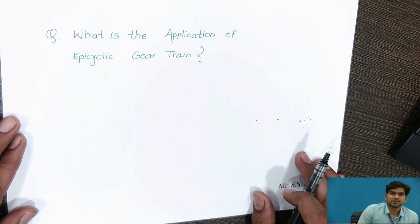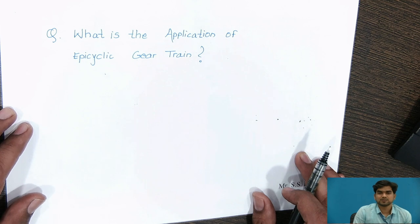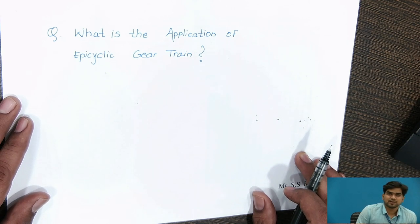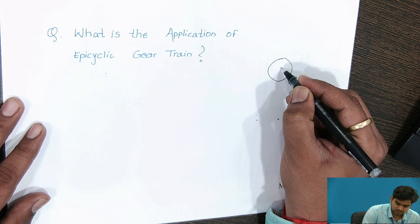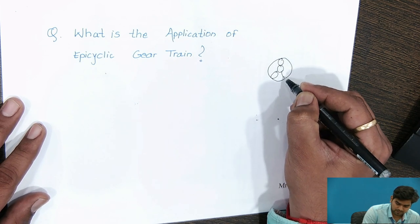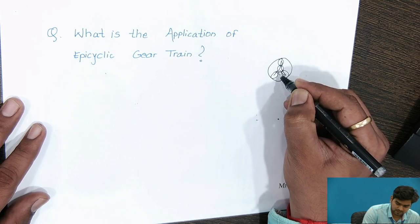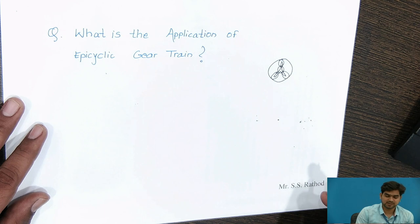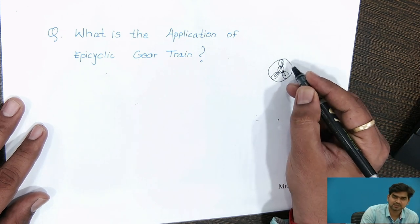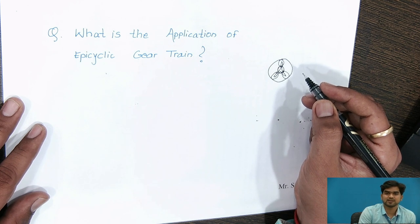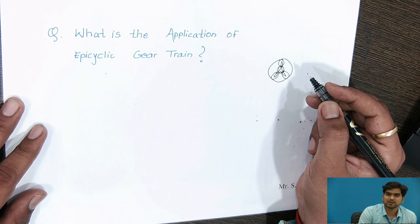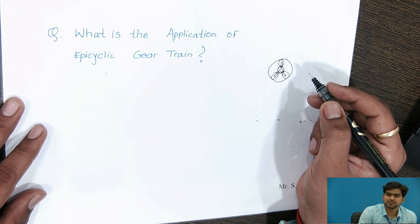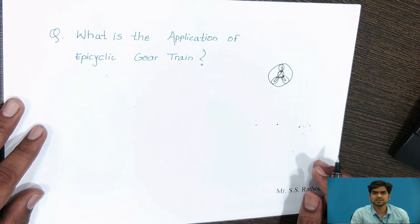One question: what is the application of epicyclic gear train? Generally, in the case of the differential gearbox, we use the epicyclic gear arrangement. Also, in the back gear of the lathe machine, the epicyclic gear train is used. Or in the case of Merton Navy machines, we use the epicyclic gear train. So there are many applications of the epicyclic gear train.